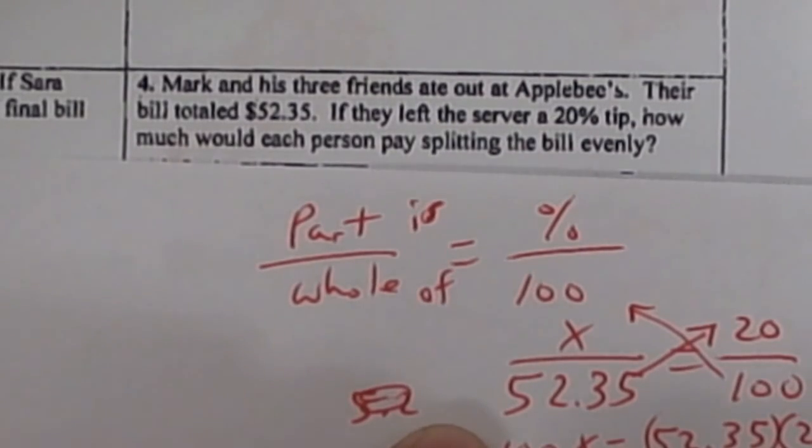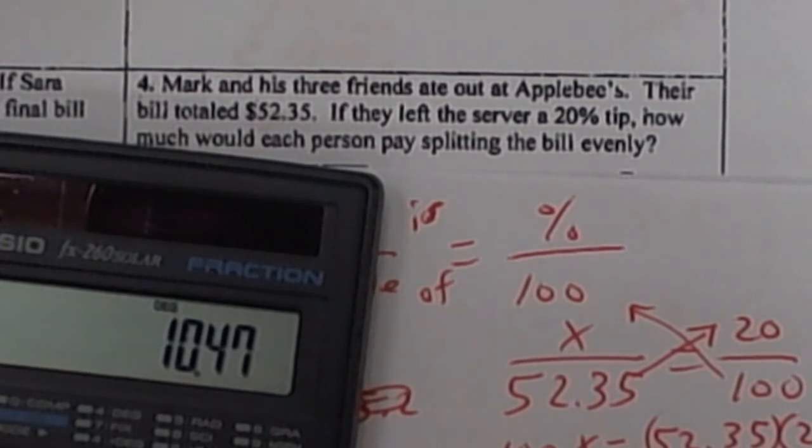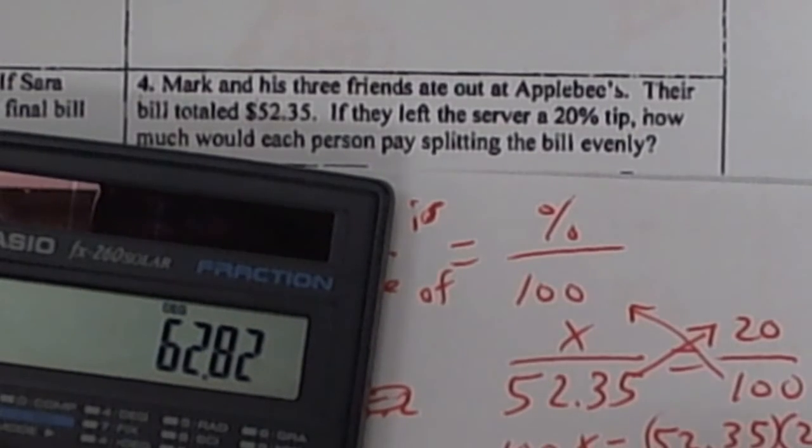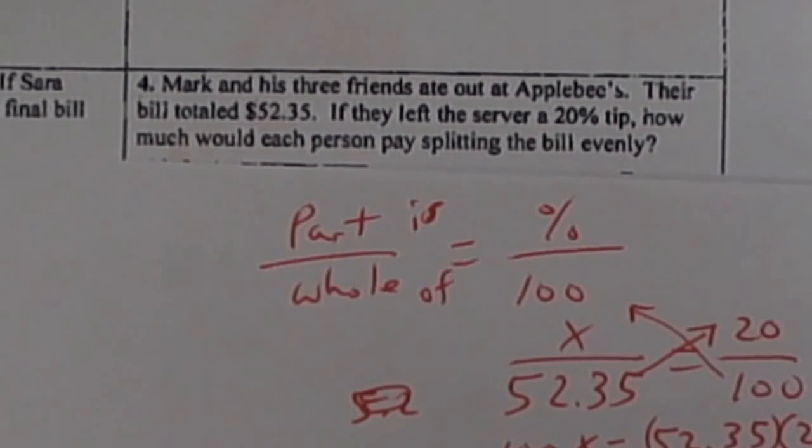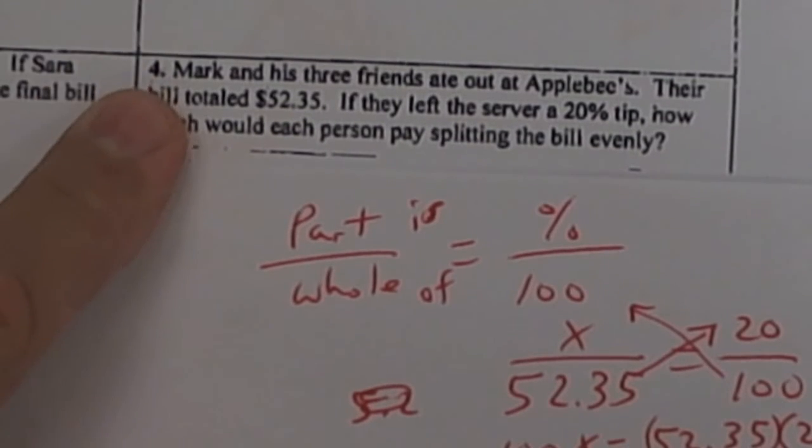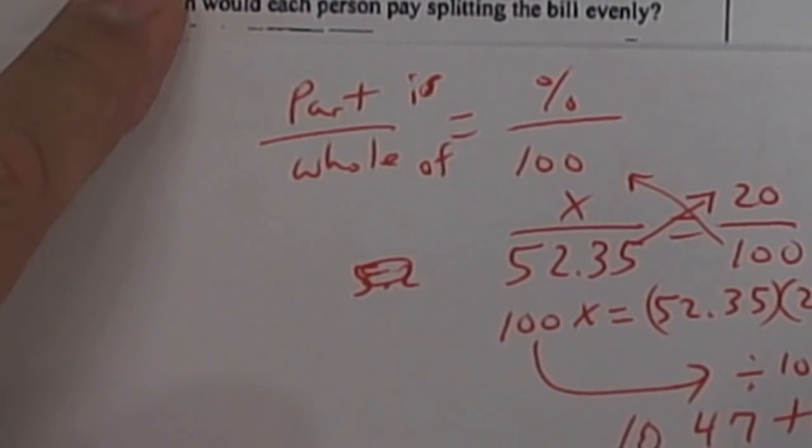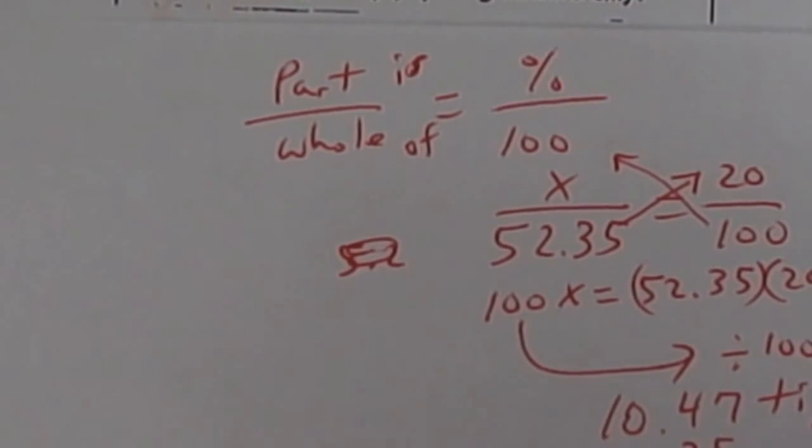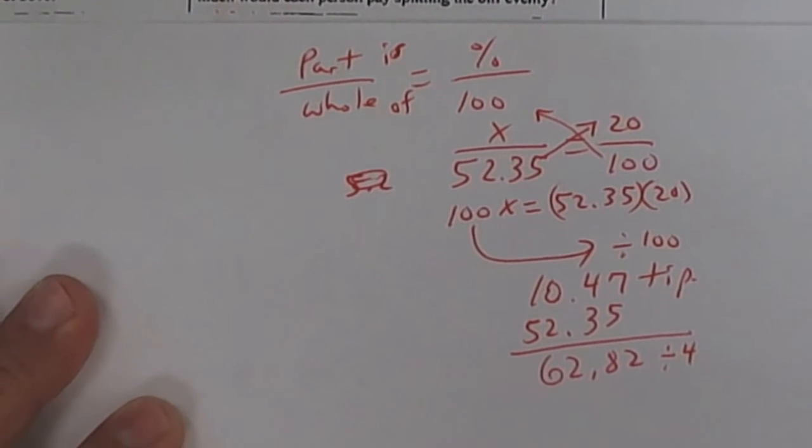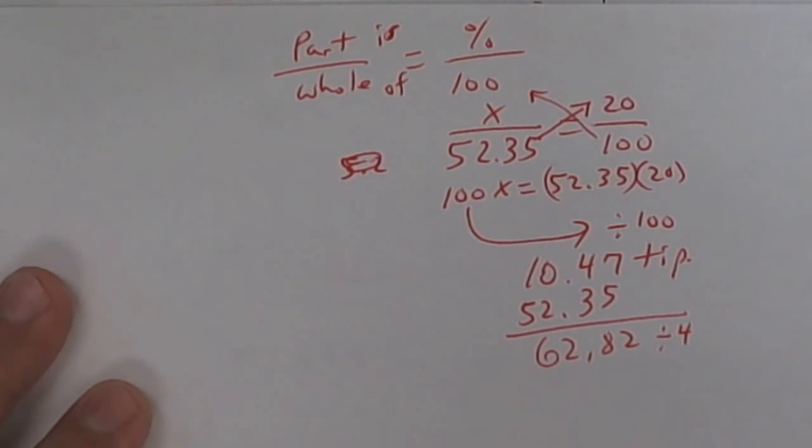But the bill was $52.35, so add that up. So plus 52.35. So plus 52.35. The total bill was $62.82, but it's Mark and three of his friends, so you have to divide this by 4 to get how much each one pays. So we're going to divide that by 4.